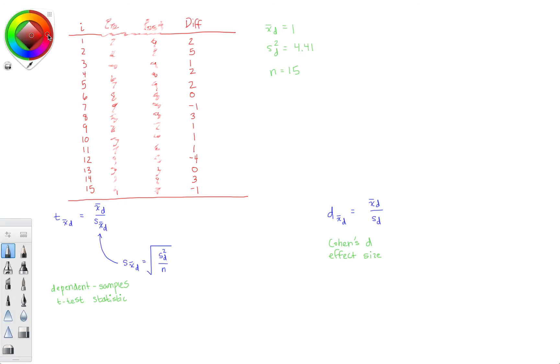So now that we have all this, let's go ahead and complete our work for the t-test statistic. So t sub x-bar sub d, the dependent samples t-test statistic, equals 1 divided by, and then for our standard error, it's going to be the square root of our variance divided by the sample size. So 4.41 over 15. And if you reduce this down, you'll get 1.85.